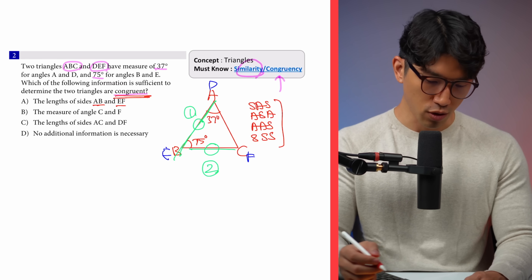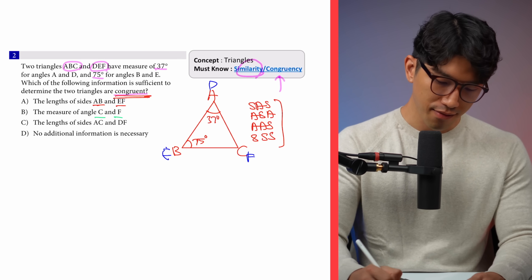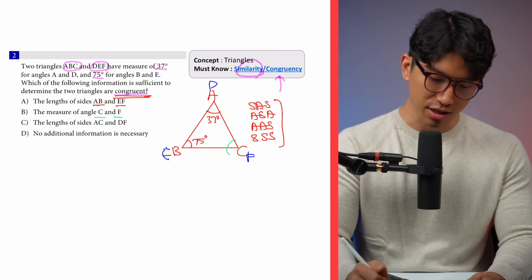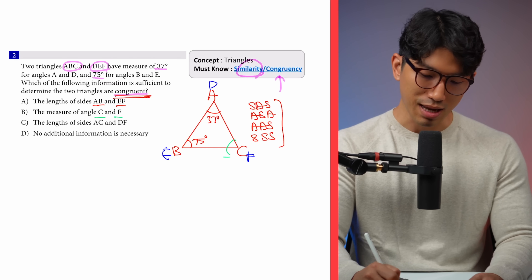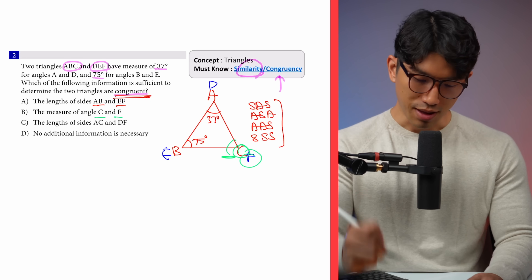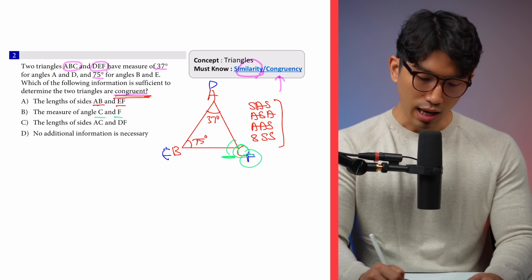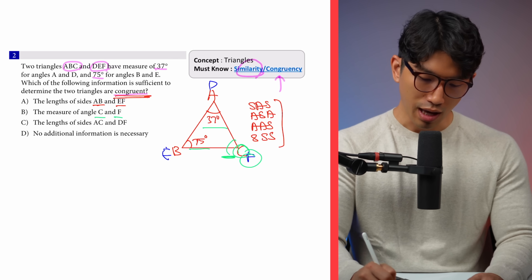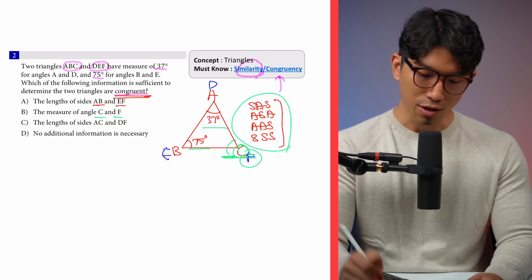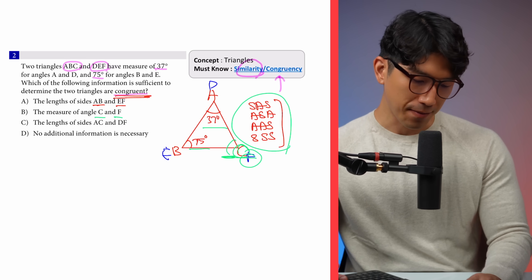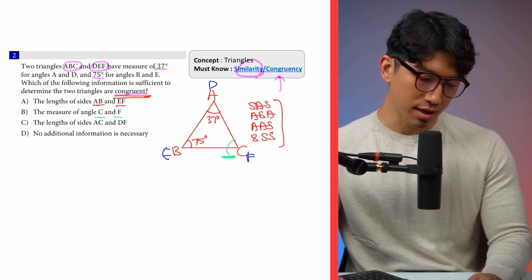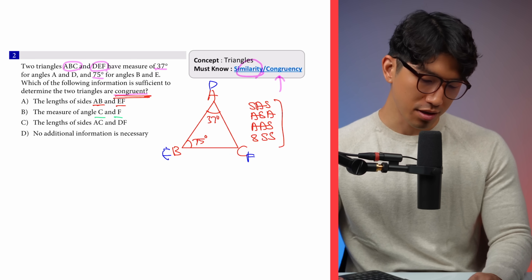Let's look at choice B: the measure of angle C and F. C and F are going to be the third angle in the same location for both triangles. But now we only know angle-angle-angle, and angle-angle-angle is not one of the congruency requirements. So choice B is going to be out.